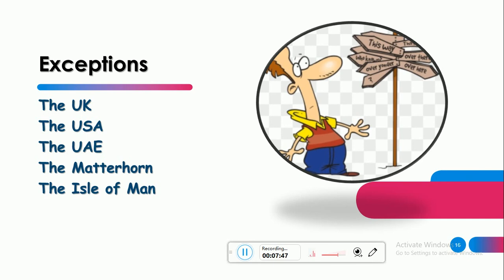We have some exceptions — استثناءات لازم نحفظها. The UK, the USA, and the UAE — all of these are abbreviations for countries, but they take the article 'the' — بنستخدم article, بس هدول نحفظهم. The UK — المملكة المتحدة, the USA — الولايات المتحدة الأمريكية, the UAE — الإمارات. Also: The Matterhorn — اسم جبل لكن استثناء, and the Isle of Man — اسم جزيرة واحدة بس استثناء. These are exceptions — هاي استثناءات لازم نحفظها.